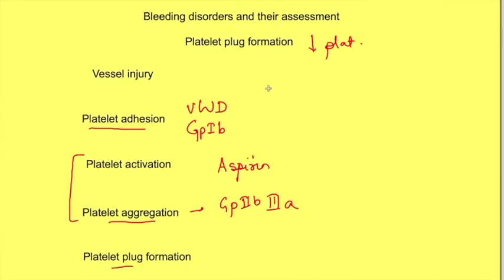Disorders of platelet plug formation manifest as appearance of petechiae and purpura on skin and mucous membranes. These are spontaneous small red dots due to bleeding in capillaries that appear on skin and mucous membranes.